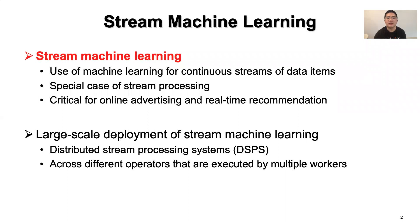Stream Machine Learning refers to the use of machine learning for continuous streams of data items, and can be viewed as a special use case of stream processing. The demands for stream machine learning are significant in various domains, such as online advertising and New York Times recommendation. To handle large amounts of data, stream machine learning should be deployed in distributed stream processing systems, in which data streams are processed in parallel across different operators executed by multiple workers.